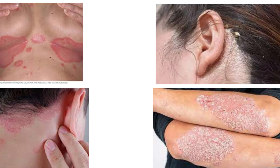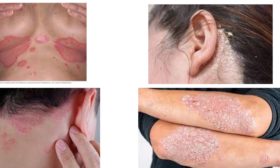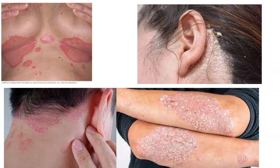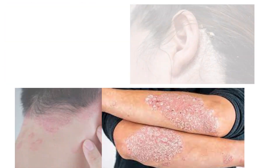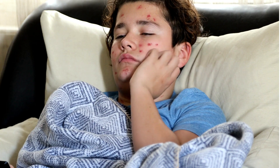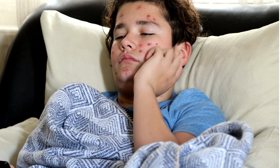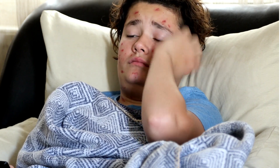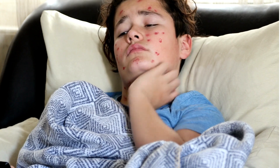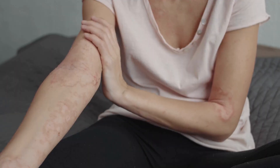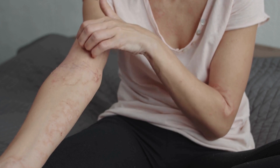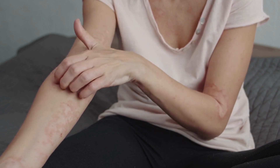HIV rash can take many different forms and can appear anywhere on the body. The rash is usually red or purple and may be itchy or painful. It can also be flat or slightly raised and may have small bumps or blisters. The rash can appear on the face, trunk, hands, feet, arms, or legs.